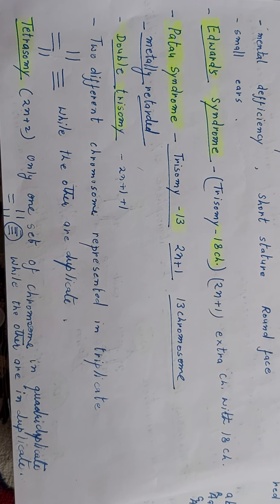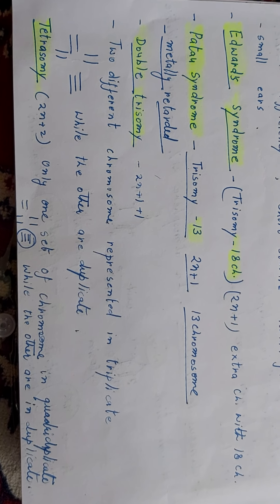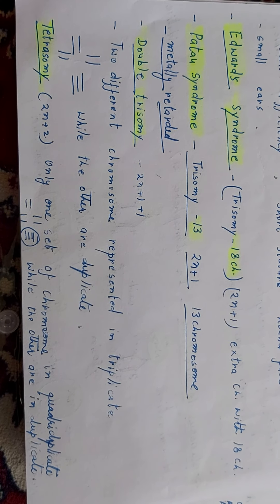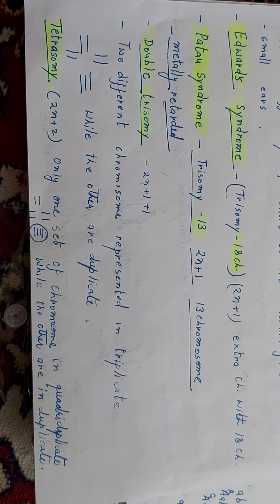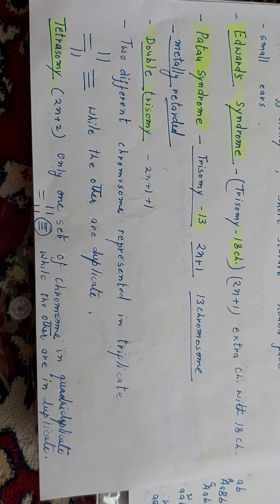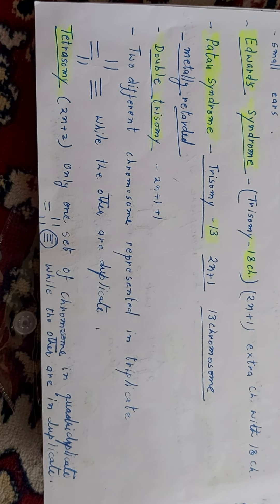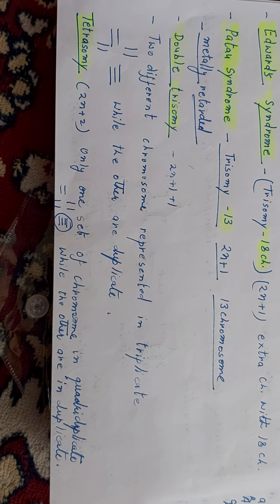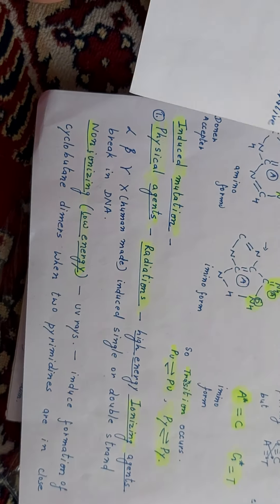Individuals with Patau syndrome are mentally retarded. Double trisomy (2N plus 1 plus 1): two different chromosomes are represented in triplicate — this is called double trisomy, while the others remain in duplicate. Tetrasomy (2N plus 2): only one set of chromosomes is in quadruplicate while the others are in duplicate condition. Thank you.